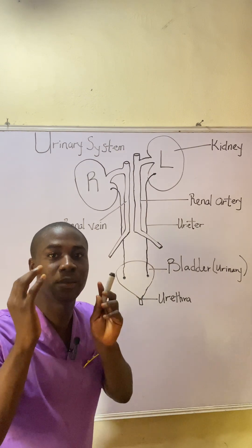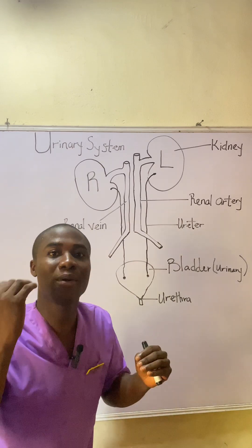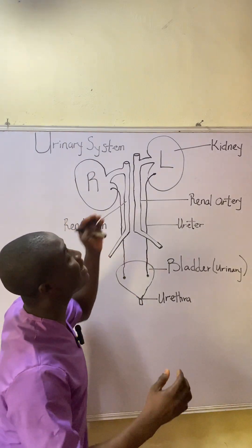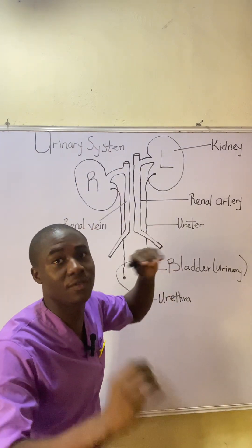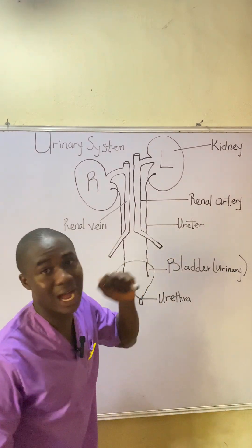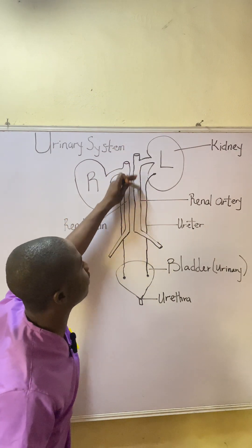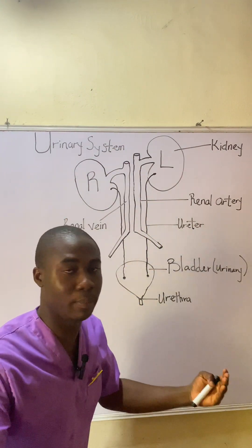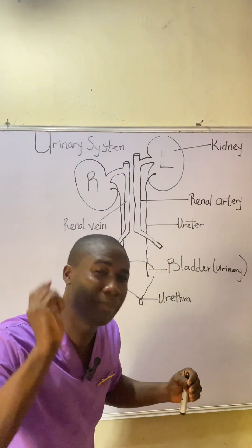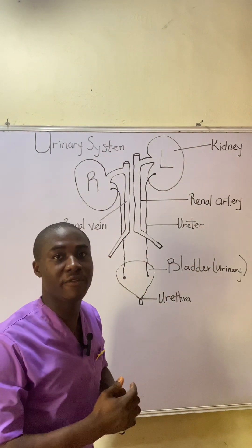Remember, blood vessels that take blood away from the heart are generally called arteries, while blood vessels that take blood back to the heart are called veins. The kidney receives the blood pumped by the heart via the renal artery. As you can see in the diagram, when this artery receives the blood, it takes the oxygenated blood pumped by the heart to the kidneys.